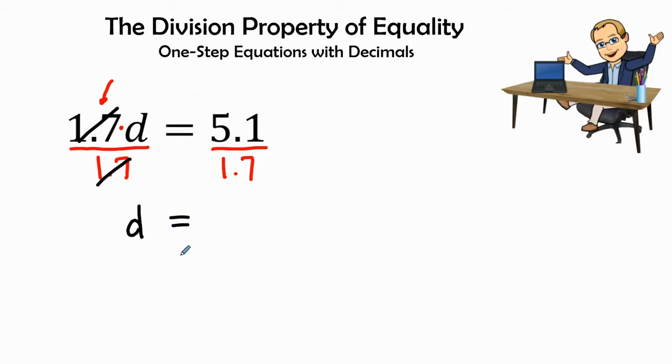I'm going to keep my equal signs in line with each other just to help me stay organized. Next, I'm going to ask myself, okay, 1.7 goes into 5.1 how many times?